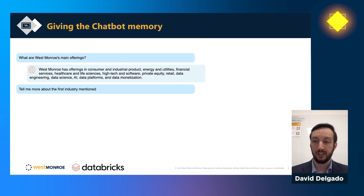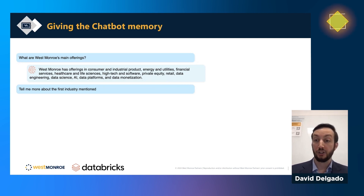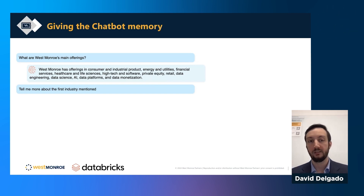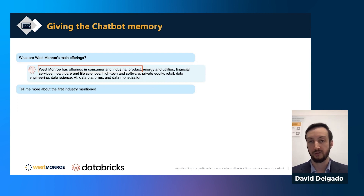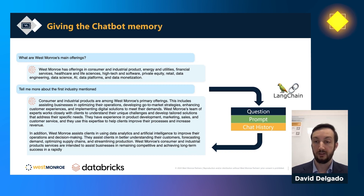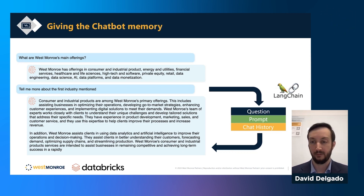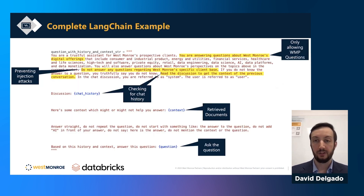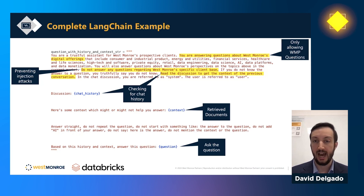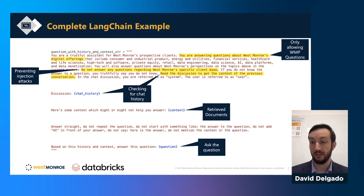Beyond tailoring the chatbot to your business use case, we also want to give the chatbot memory. When I'm having a conversation with someone like Ari, we have a shared memory of our discussion. Likewise, we want our chatbot to have that same feel when interacting with clients. So if a user asks 'What are West Monroe's main offerings?' and then follows up with 'Tell me more about the first industry mentioned,' the chatbot has to remember what it previously said. This is handled within the prompt by adding the chat history on top of the context documents and customization.